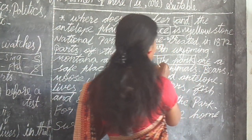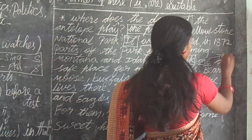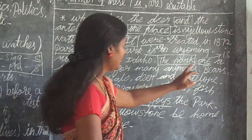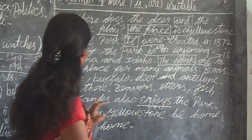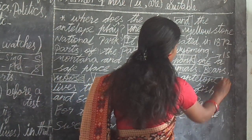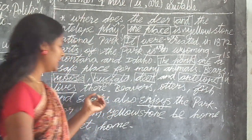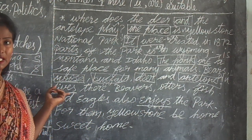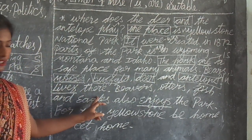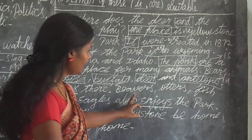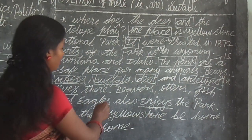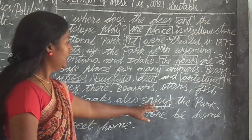The same place is home to many animals: moose, buffaloes, deer, and bison. These elements are the subject, so the subject is plural and we use a plural verb. Weavers, otters, fish, and eagles are also subjects here — subject is plural — so we use a plural verb: 'enjoy.' Yellowstone is home sweet home for them.